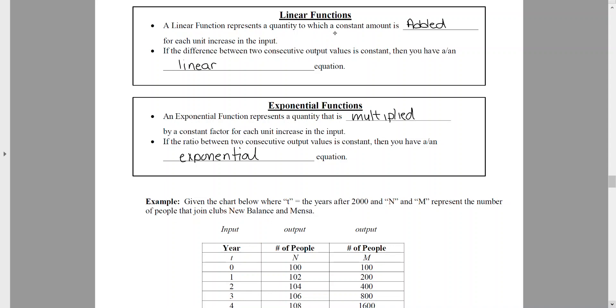A linear function represents a quantity to which a constant amount is added for each unit increase of input, and that's key. If the difference between two consecutive output values is constant, then you have a linear equation.